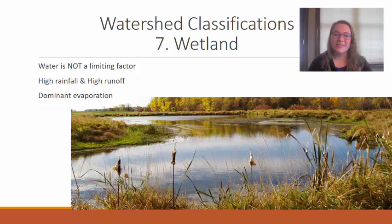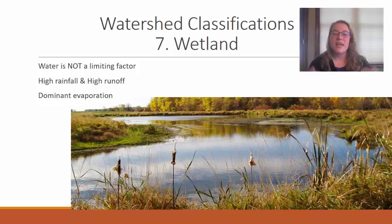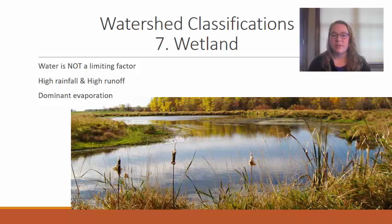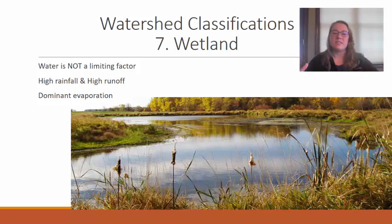The next watershed type is a wetland. Wetlands are a favorite ecosystem, and in a wetland, water is not a limiting factor. A wetland is a section of land fully saturated with water for at least part of the year. This could be a vernal wetland that is only completely saturated in the spring, or a perennial wetland that is saturated all year long. Wetlands tend to have high levels of rainfall and high levels of runoff, acting as sponges that absorb water during rainfall events and slowly release it back into the wetland environment.